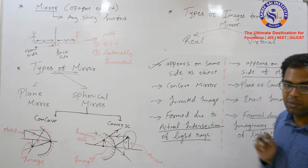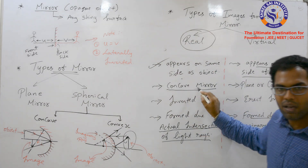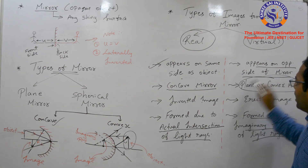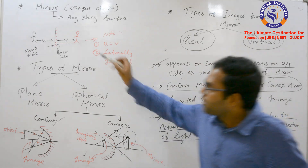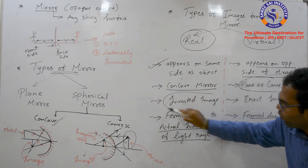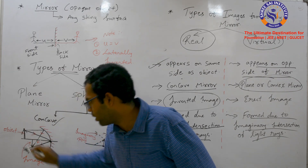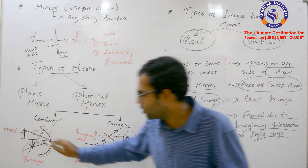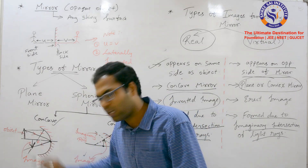The real image — which is the type formed by a concave mirror — and the virtual image — which is formed by a plane or convex mirror — are the two categories. The real image is also an inverted image: you can see that the object arrow points upward, but the image arrow points downward, meaning it is inverted.